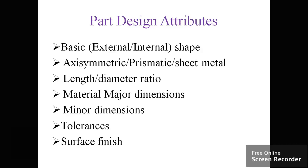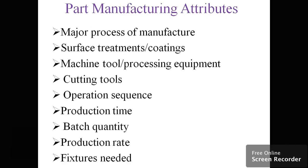For manufacturing attributes, these are things which are similar for manufacturing different objects and the processes of manufacturing. This includes surface treatments and coatings—whether metal coatings are on the outer surfaces or inner surfaces.